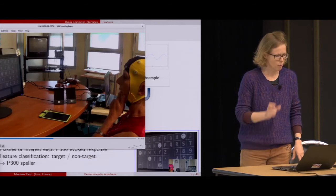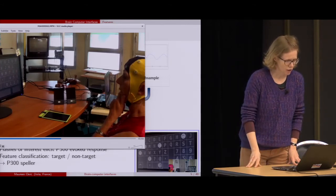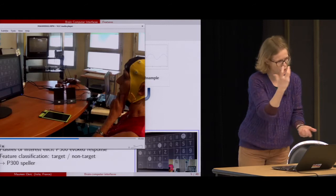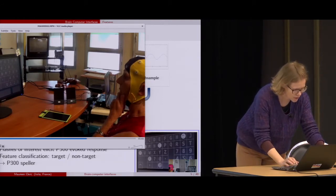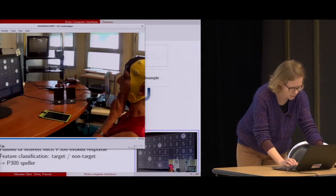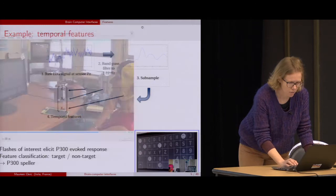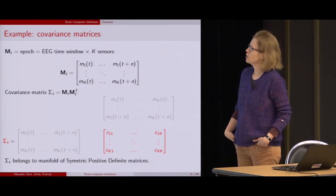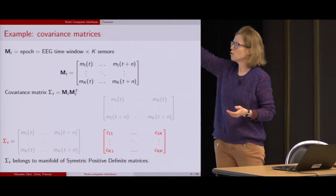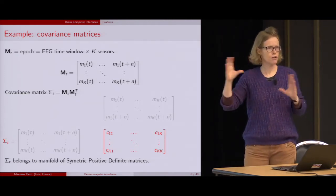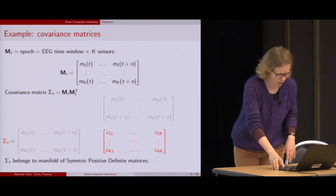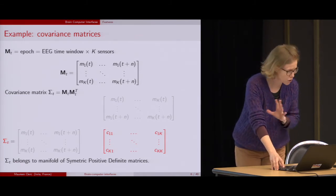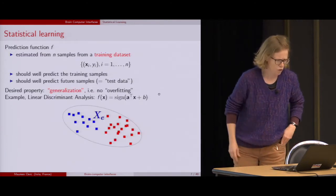The person is trying to type one letter at a time. She's watching stimuli that flash, and each time that a group of letters contains the letter she wants to type, after a few repetitions, that letter gets shown to her — the command is typing a letter. Another example of features are covariance matrices, which look at the correlation between chunks of data across sensors and time. These covariance matrices have some invariance properties that we'll go into a little bit later.